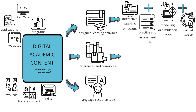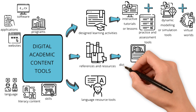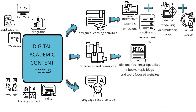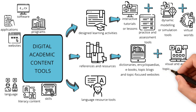The references and resources consist of the following elements. First, there are dictionaries, encyclopedias, e-books, topic blogs, and topic-focused websites that serve as information resources. A good example is an online encyclopedia that offers students pictures, facts, and videos about mammals, or a digital dictionary. Secondly, there are visual and auditory topic-related resources, such as a YouTube video on earthquakes and plate tectonics.